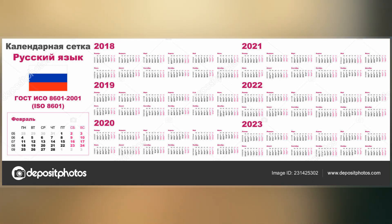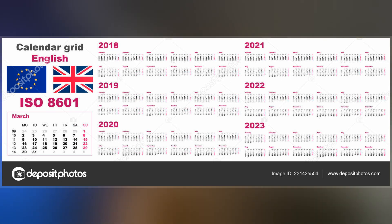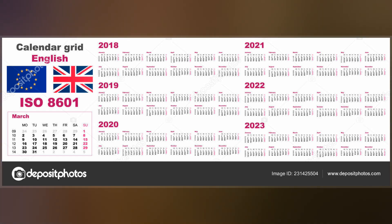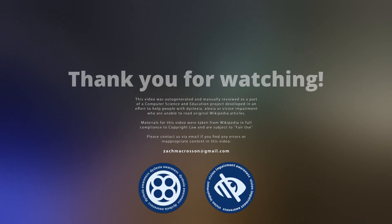In representations for interchange, dates and times are arranged so the largest temporal term is placed to the left and each successively smaller term is placed to the right of the previous term.